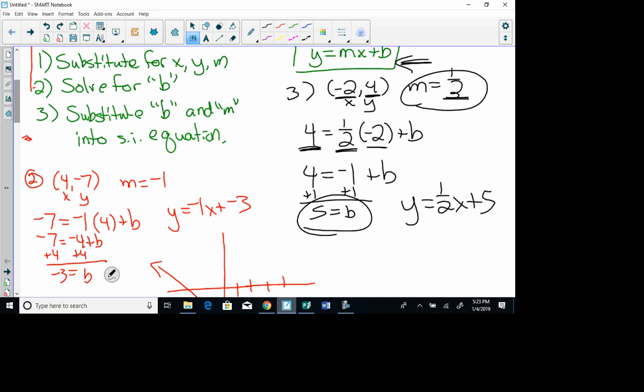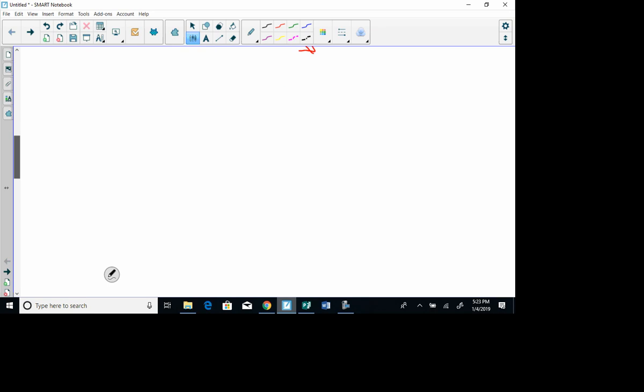Okay, you're going to use those same steps. And here's your secret problem. I want you to write me the equation of a line in slope-intercept form that goes through the point 3, negative 4, and has a slope of negative 1 third.